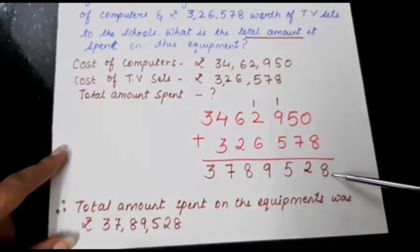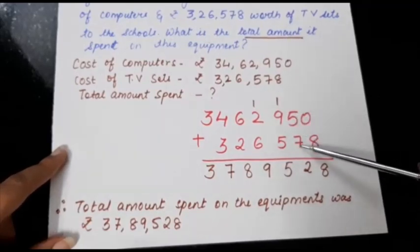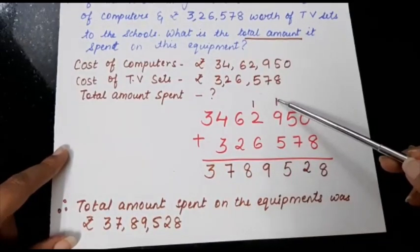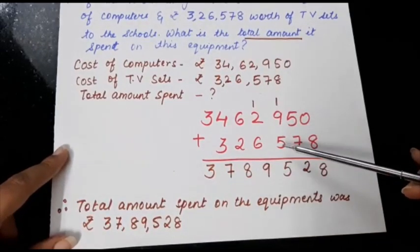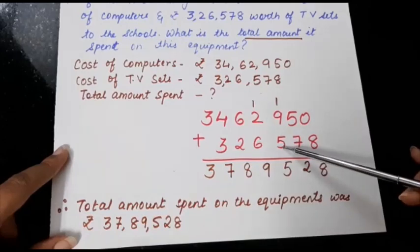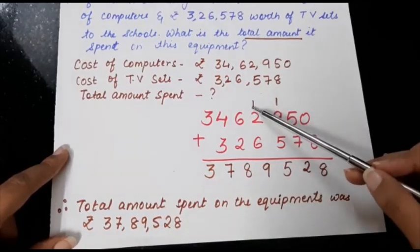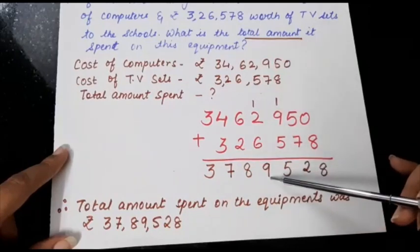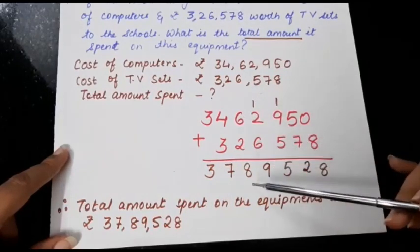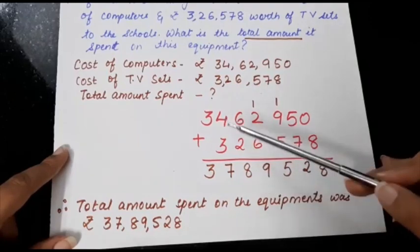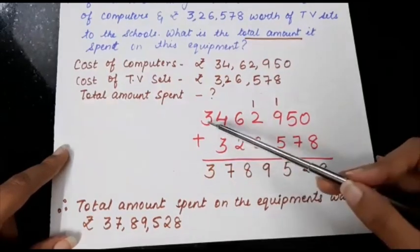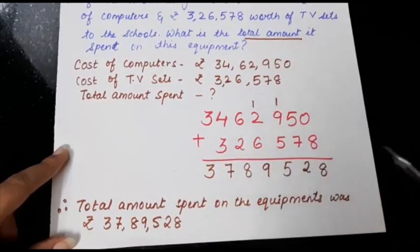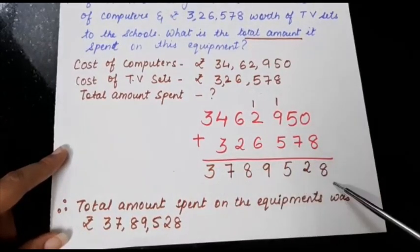8 plus 0 is 8. 5 plus 7 is 12. 2 and 1 we will carry. 1 plus 9 plus 5 is 15. 5 and 1. 2 plus 1 is 3 plus 6 is 9. 6 plus 2 is 8. 4 plus 3 is 7. 3 nothing is there. So we will write 3 only. So what is the answer that we got? 37,89,528.